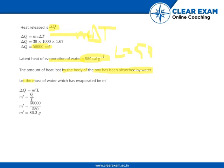Let the mass of water which has evaporated be m'. From the formula ΔQ = m'L, the mass of water evaporated is 86.2 grams.